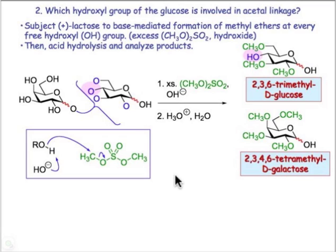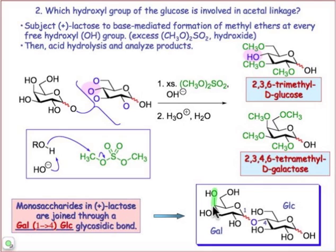What we can conclude is the complete structure is galactose on the left with its axial hydroxyl group connected at C4 to glucose on the right. We would describe this as galactose linked at position 1 — the anomeric position — to position 4 of glucose through that glycosidic linkage.